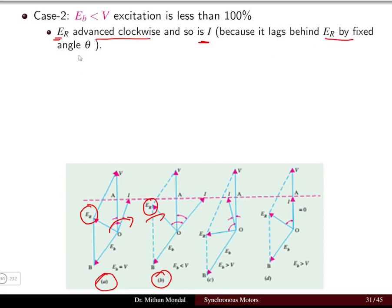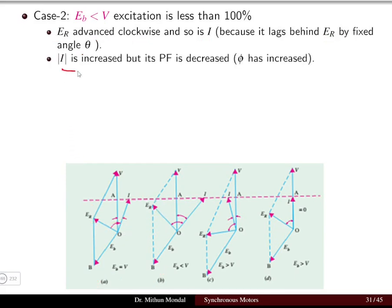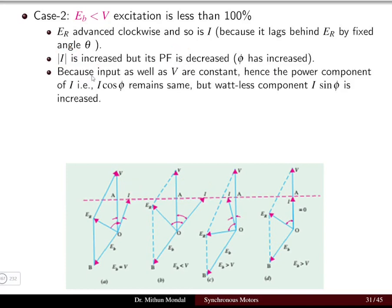The current, although still lagging Er by the fixed angle theta, has now increased in magnitude. Comparing the magnitude of the current from case one to case two, it has increased and the power factor has decreased because the phase angle between voltage and current has increased. Because the power input and voltage are constant, the power component of the current, I·cos φ, remains the same. A current has two components: I·cos φ and I·sin φ, and I·cos φ remains constant.